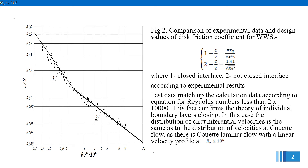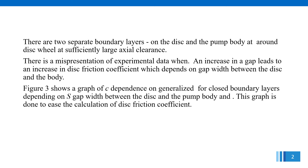Comparison of experimental data and design values of disk friction coefficient for WWS, where curve 1 represents the closed interface and curve 2 the not-closed interface, according to experimental results. Test data match the calculation data according to the equation for Reynolds numbers less than 2×10⁴. This fact confirms the theory of individual boundary layers closing. In this case, the distribution of circumferential velocities is the same as the distribution of velocities at Couette flow, as there is quite laminar flow with a linear velocity profile.